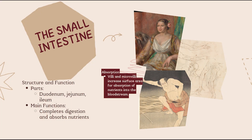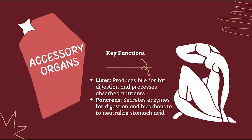The small intestine is the main site for digestion and absorption. It has three parts: the duodenum, jejunum, and ileum. Enzymes from the pancreas and bile from the liver help digest food. Villi and microvilli increase the surface area, allowing nutrients to pass into the blood. The small intestine is about six meters long.